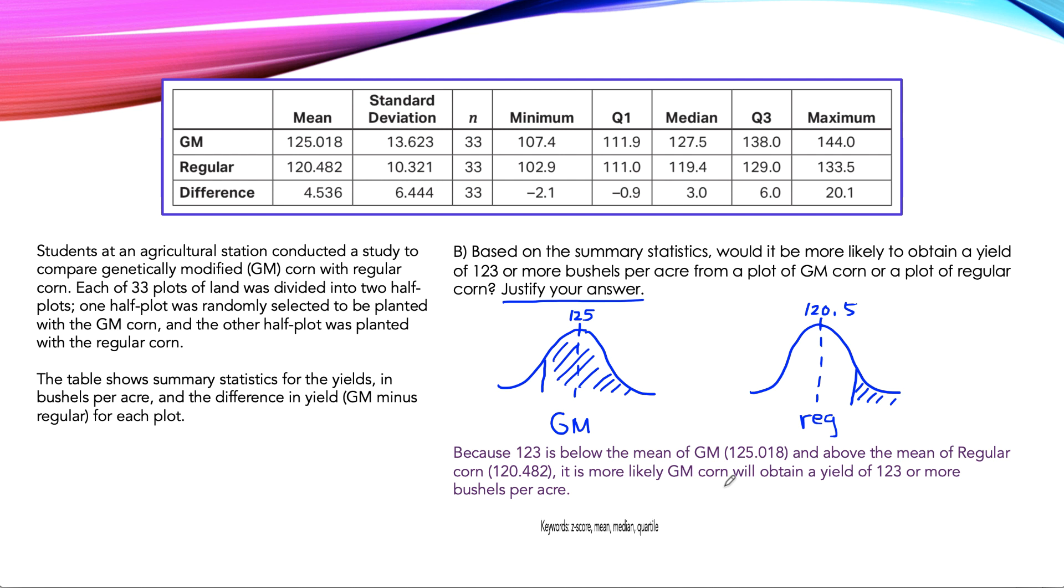What kind of keywords am I looking for? You could use z-score to justify your answer. You could calculate the z-score and then compare the two. You could use mean like I did. You could also use median. Remember, median is another way of measuring center.